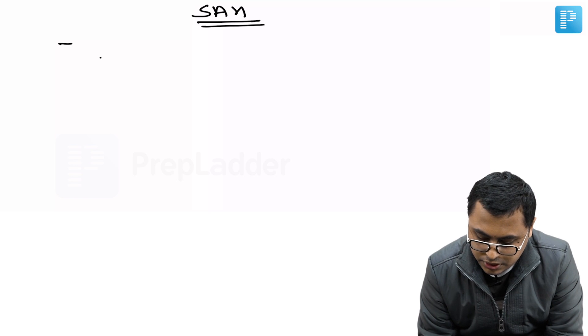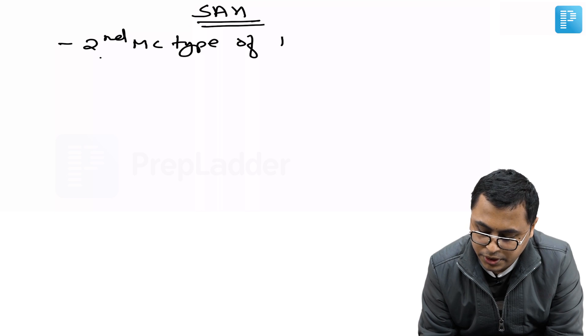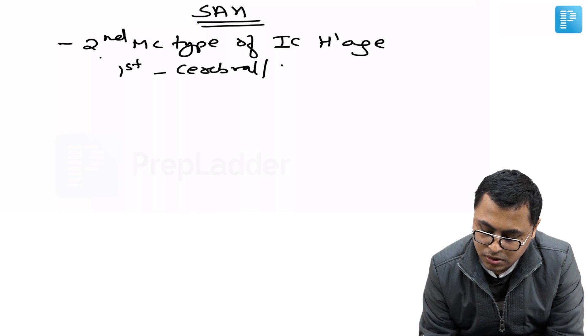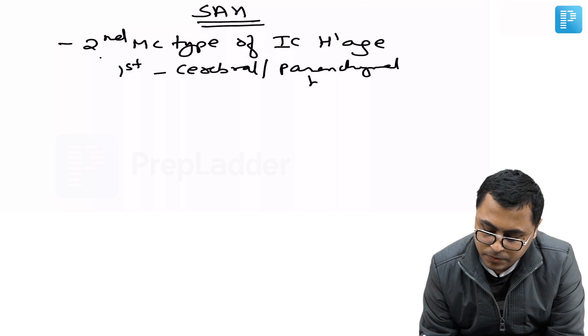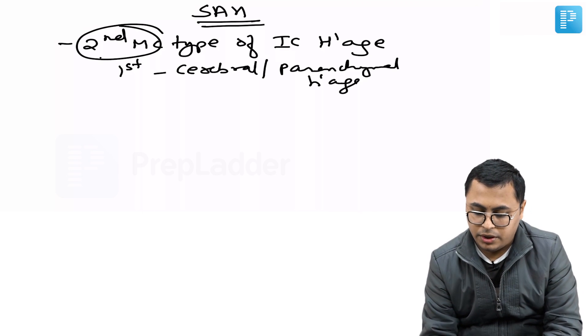Subarachnoid hemorrhage is the second most common type of intracranial hemorrhage. First is cerebral or parenchymal hemorrhage.